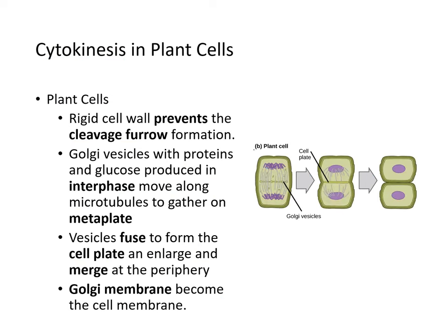In plant cells, cytokinesis is slightly different. The rigid cell wall prevents the cleavage furrow from forming. Instead, Golgi vesicles with proteins and glucose produced in interphase move along the metaphase plate. Vesicles fuse to form the cell plate, which enlarges and merges at the periphery. The Golgi vesicles line up at the metaphase plate, and the cell plate begins thickening.